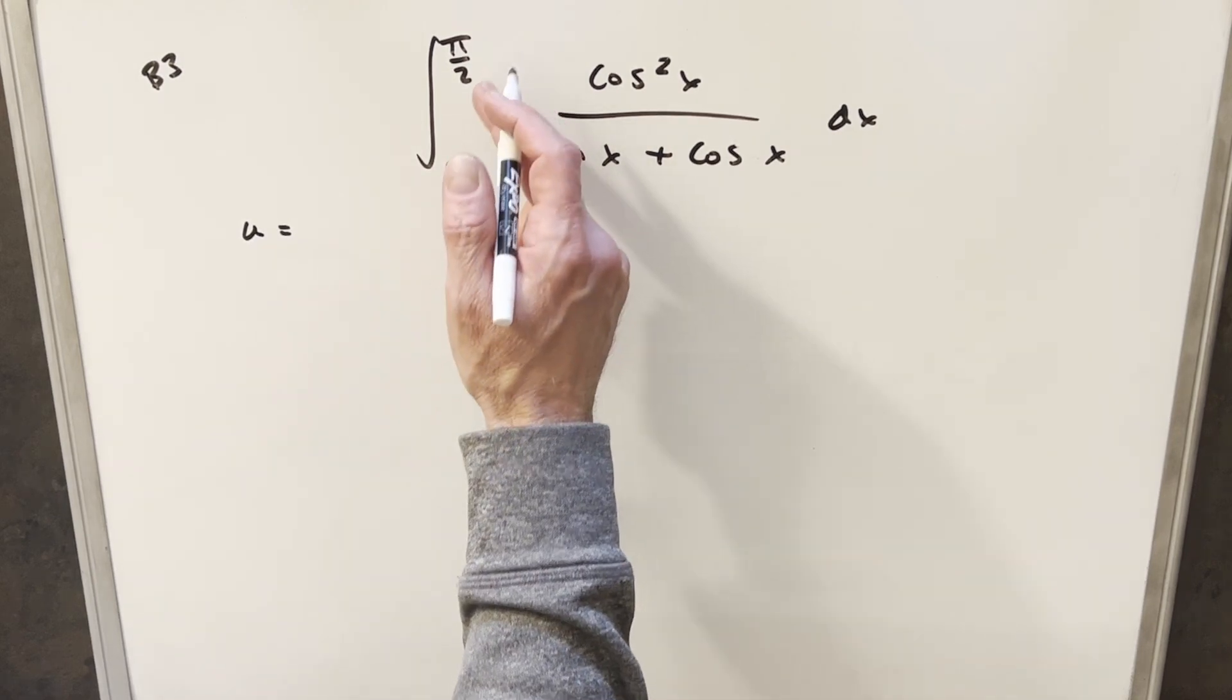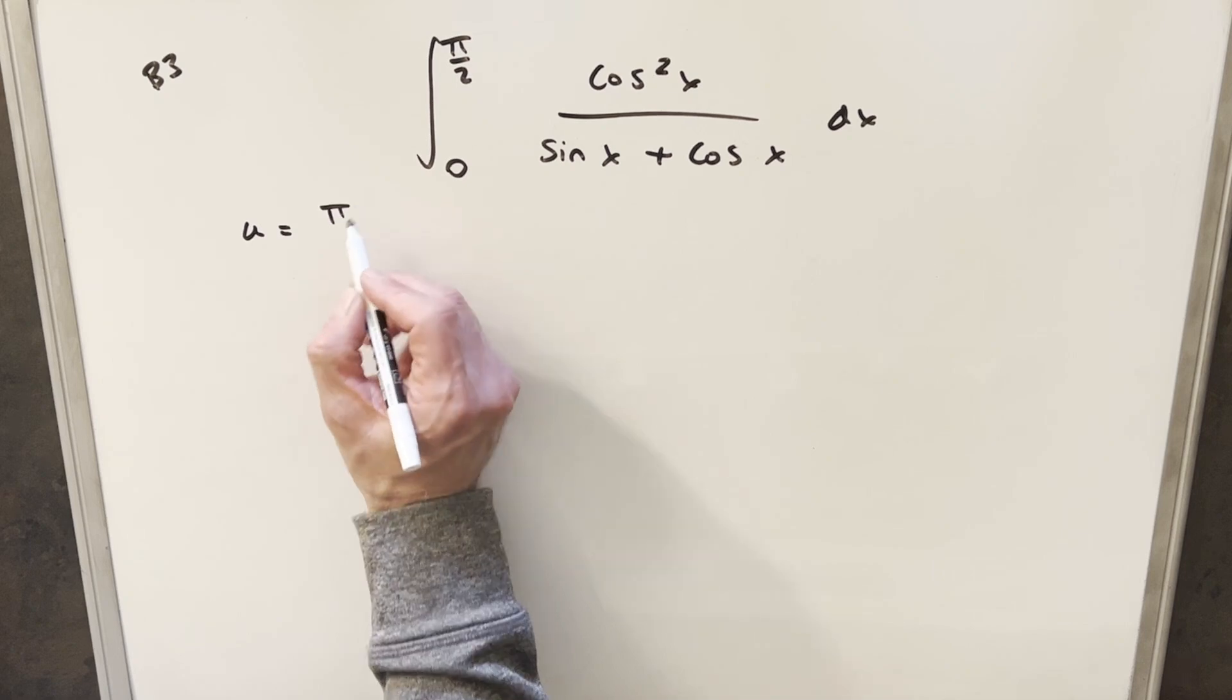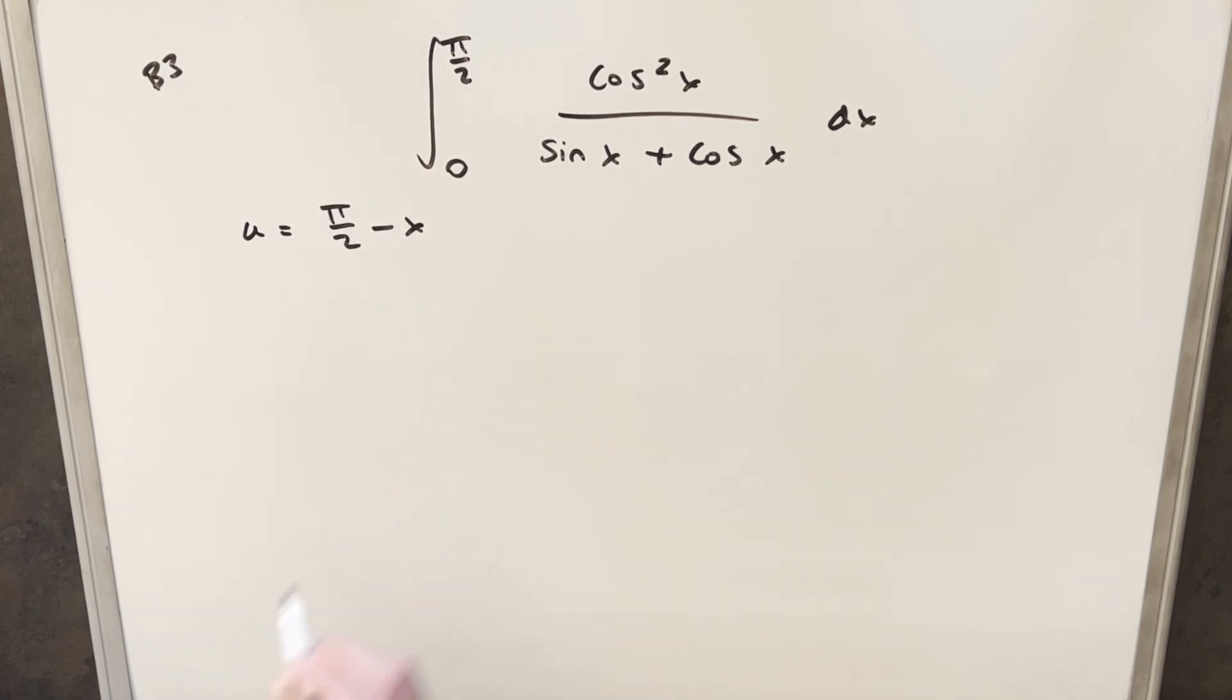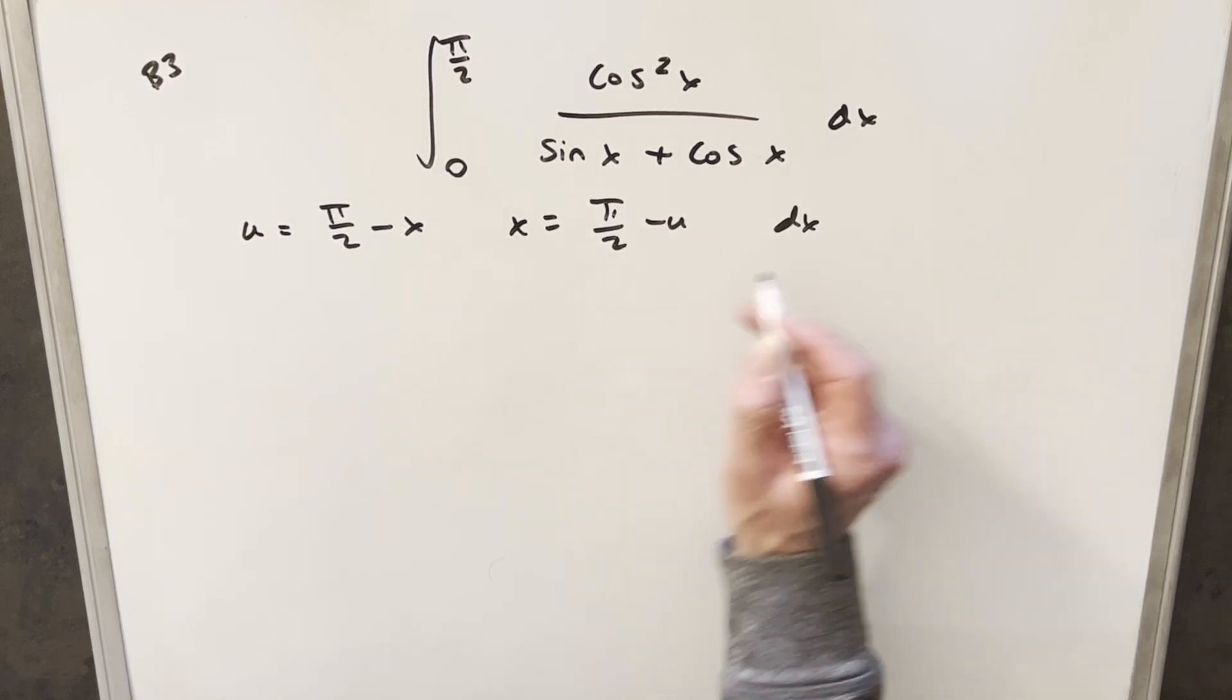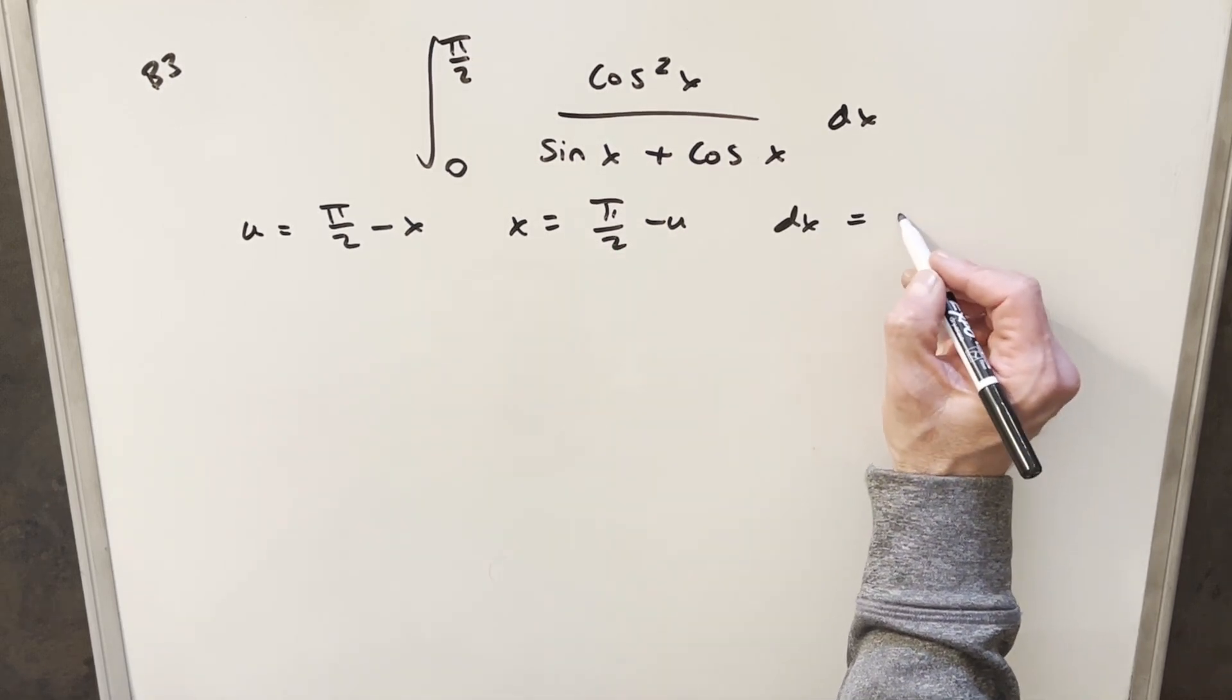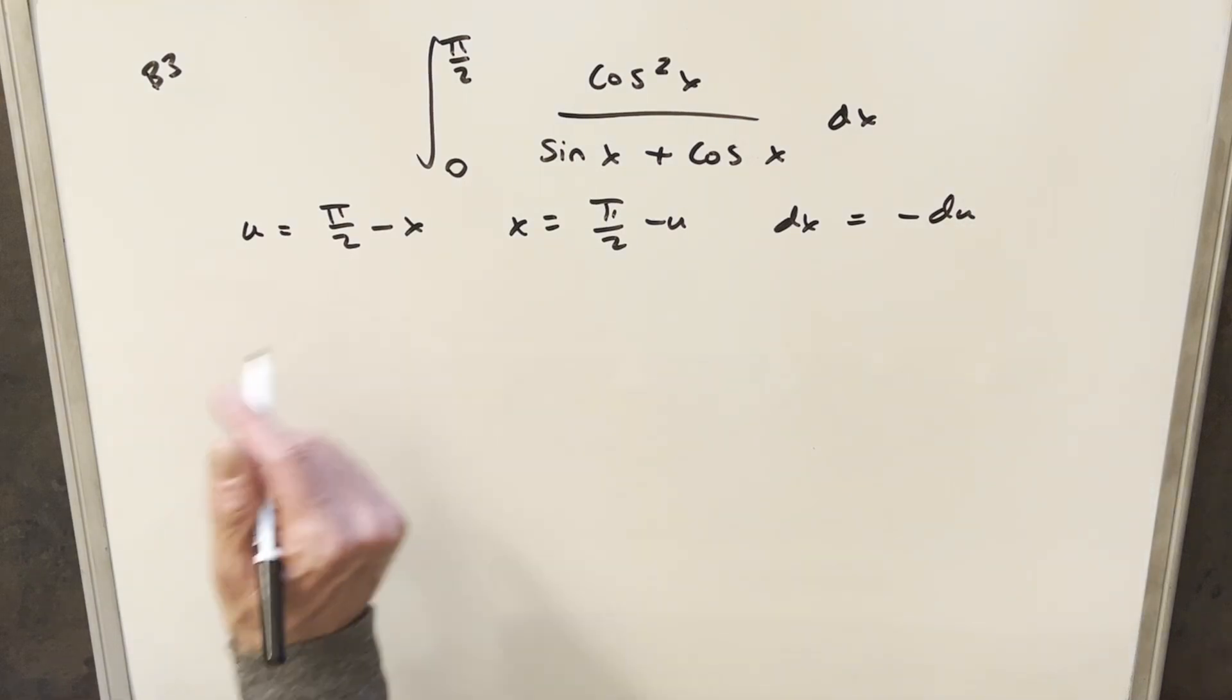So for our u-substitution, we just add the bounds and we get π/2 minus x. Solving for x, we're going to have x is π/2 minus u and taking a derivative, dx is going to be minus du.